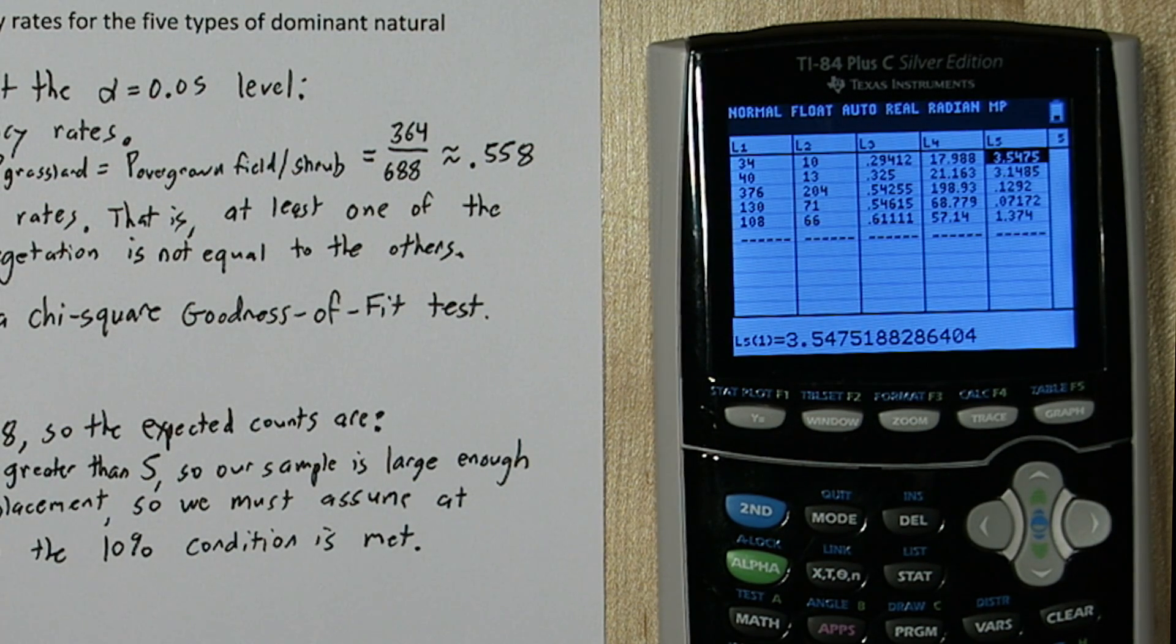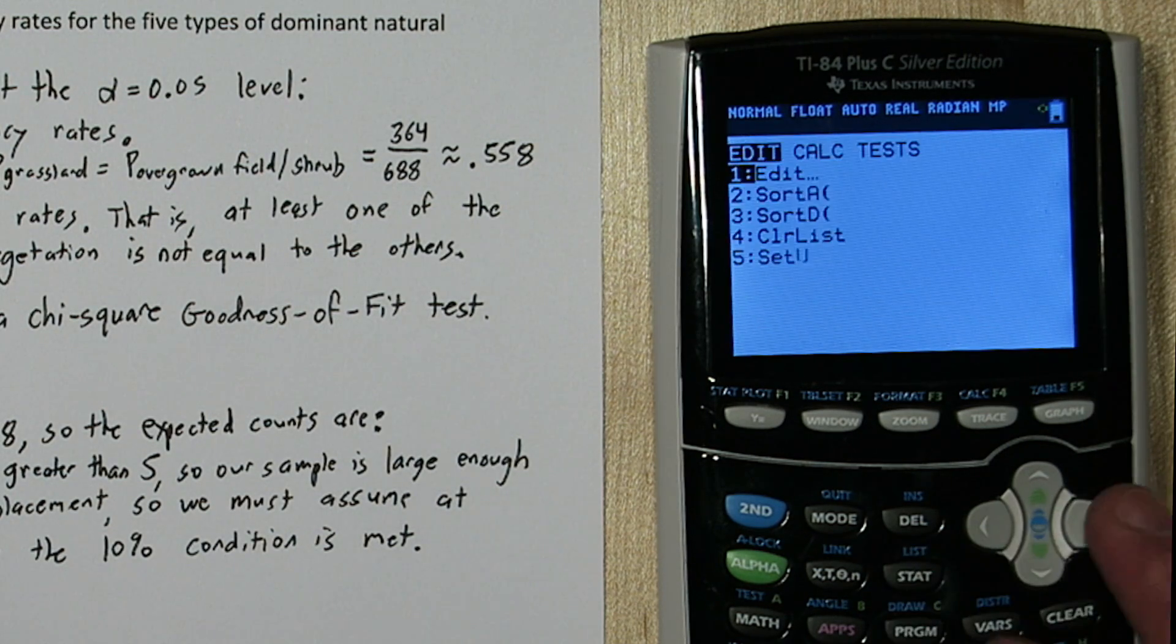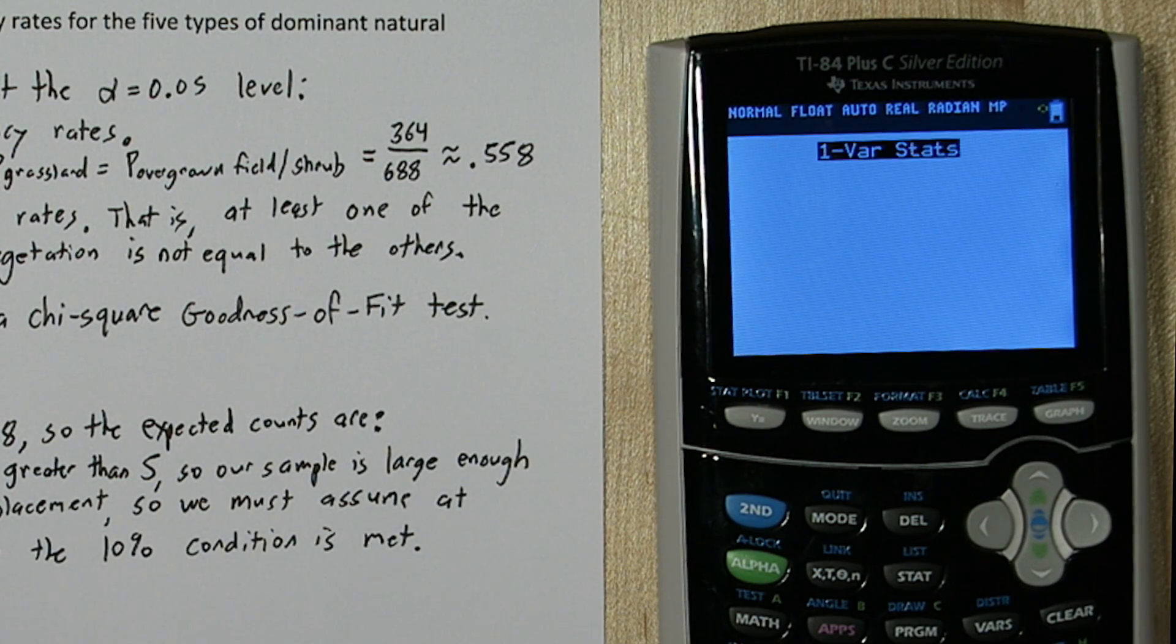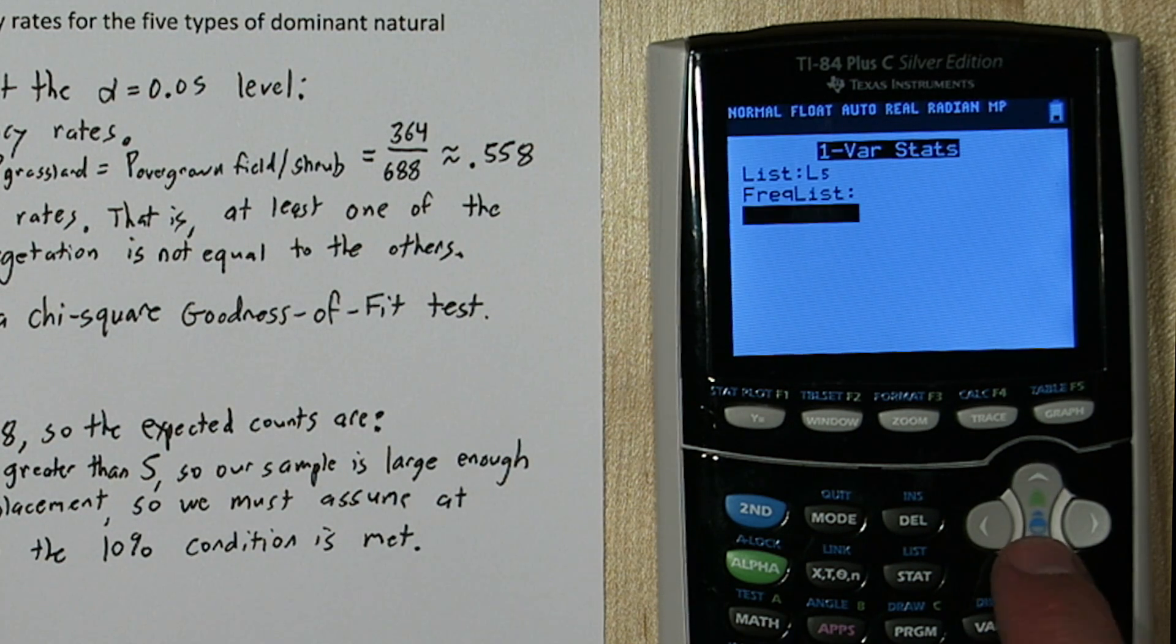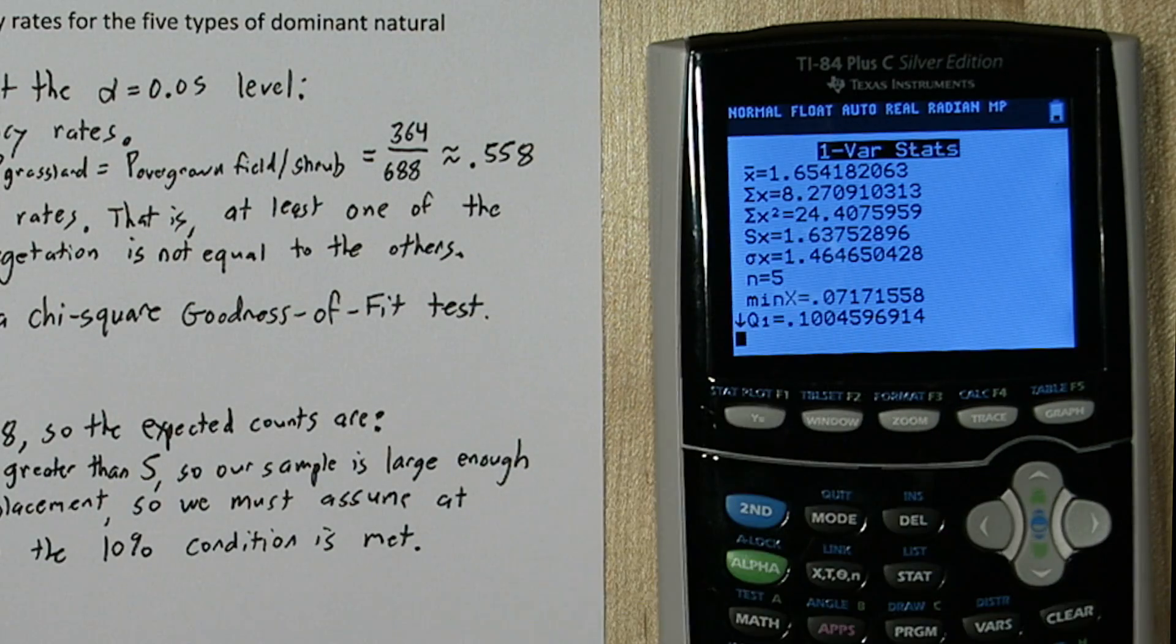All right, these are our contributing factors, and their sum is going to be the chi-square test statistic. So let's find the sum of list five by pressing stat, calculate, one VAR stats for list five, so second list five, and there's our sum and also our chi-square test statistic.